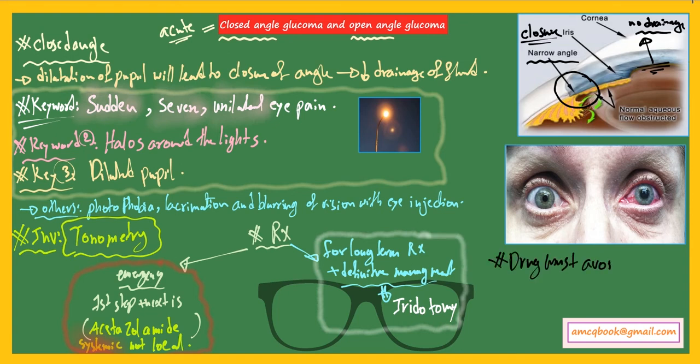The drug that must be avoided in glaucoma is atropine, because this causes pupillary dilation and leads to more obstruction of the angle.